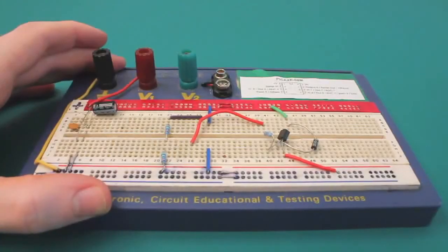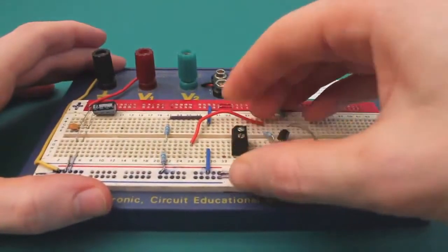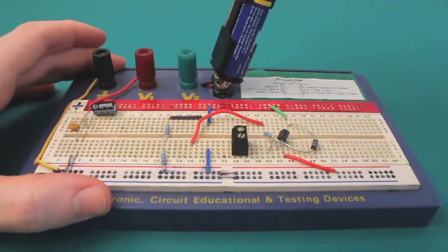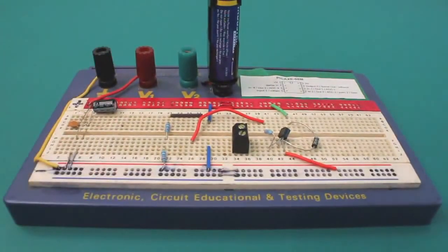There are many different kinds of breadboards. Some are more complicated than others, as shown here, but the principle's always the same. Power rails run horizontally, and component rails, usually with a break in the middle, run vertically. The best way to learn is to experiment.